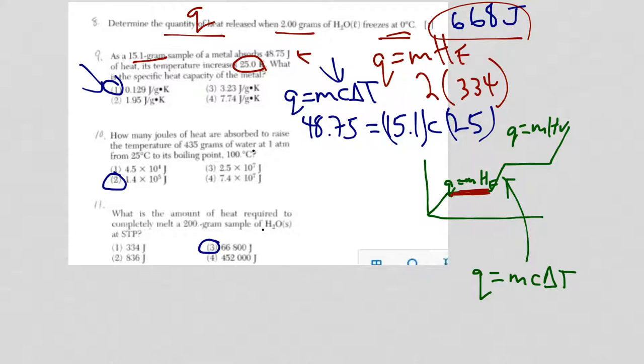Okay, let's look at question 10. Now we're looking for joules of heat, which is Q, to raise the temperature of 435 grams of water. So we're back to water again. 1 atm, from 25 to 100 degrees Celsius. So since we have a temperature change, we're going to once again use Q equals MC delta T.